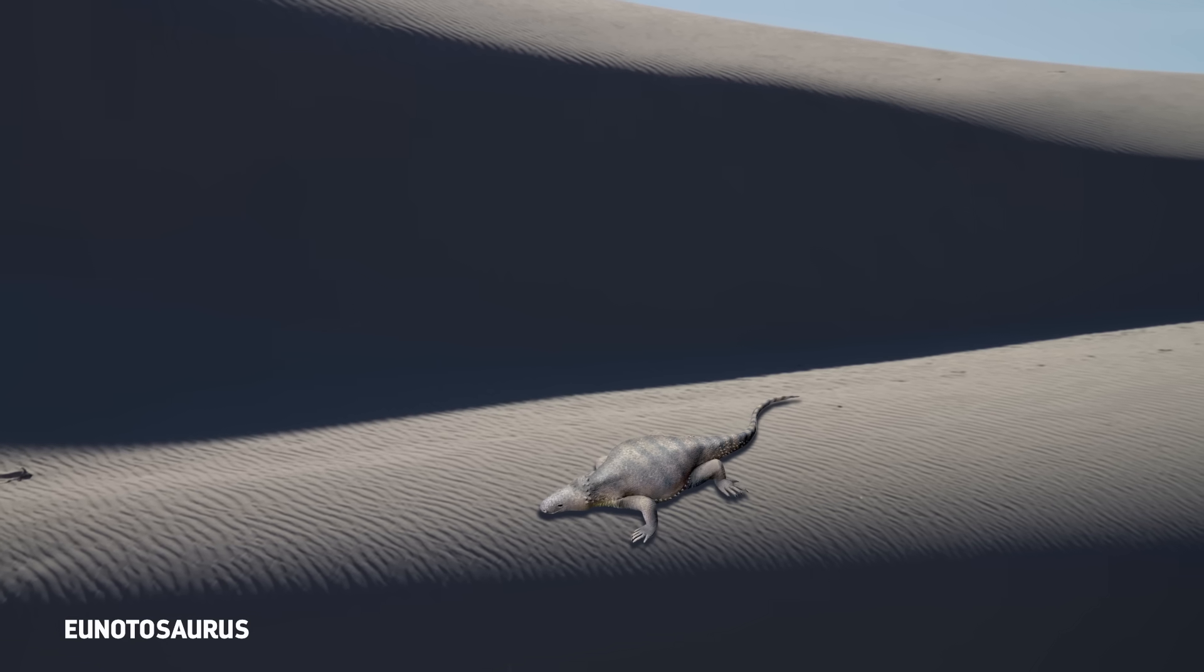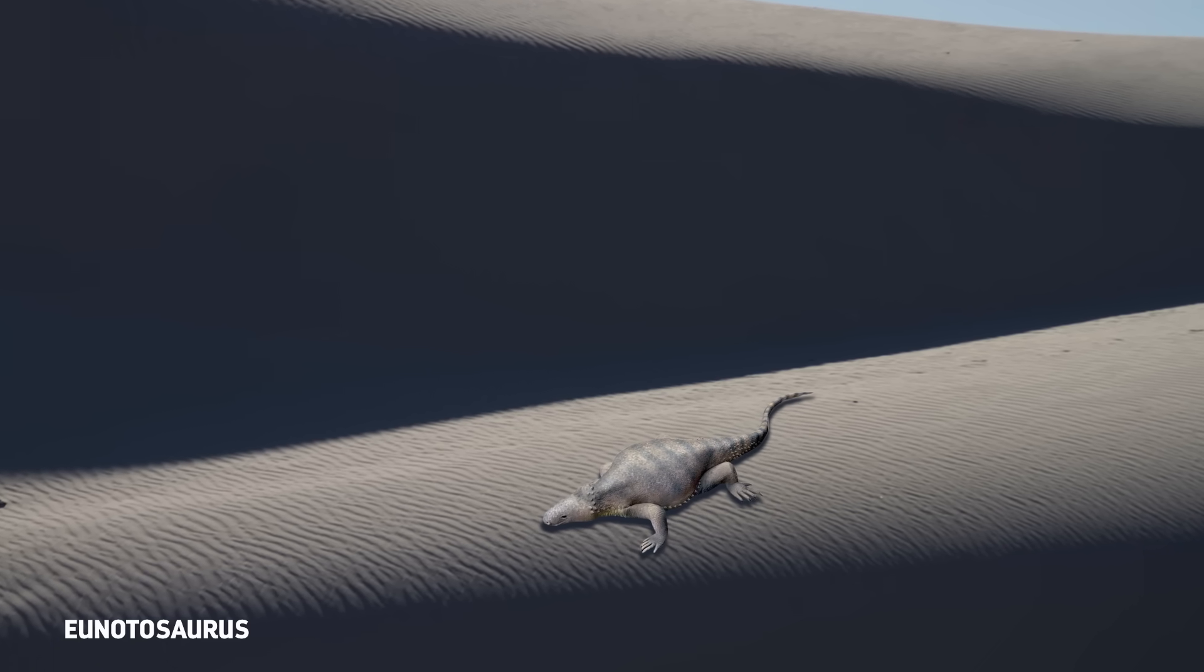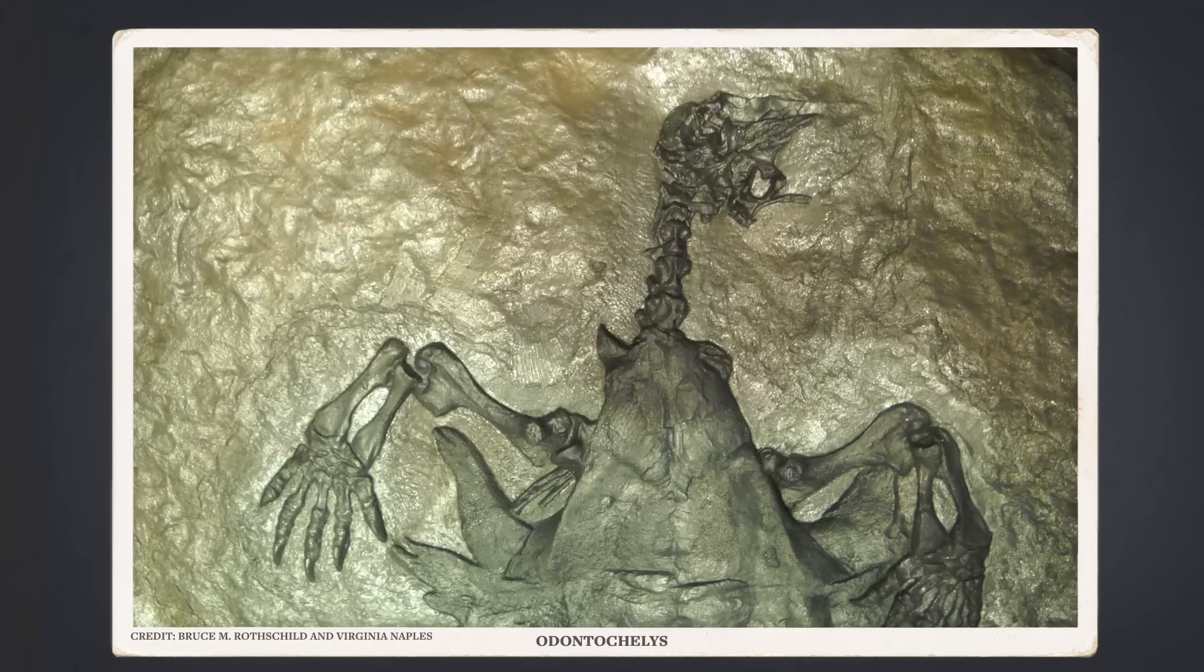In 2010, the discovery of Odontochelys led researchers to re-examine another ancient species, called Eunotosaurus. It lived about 260 million years ago in Africa, long before Proganochelys and the previously found Odontochelys.